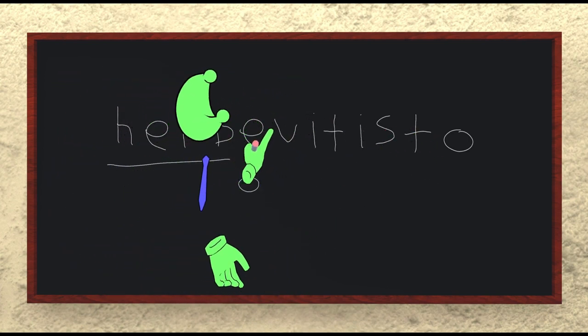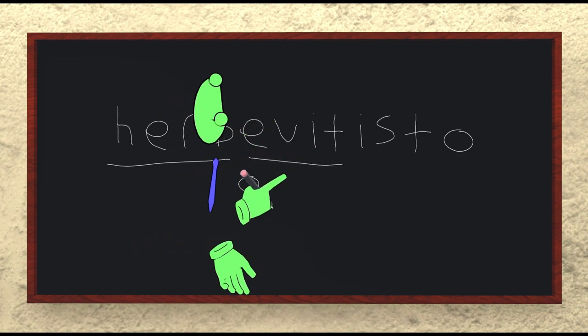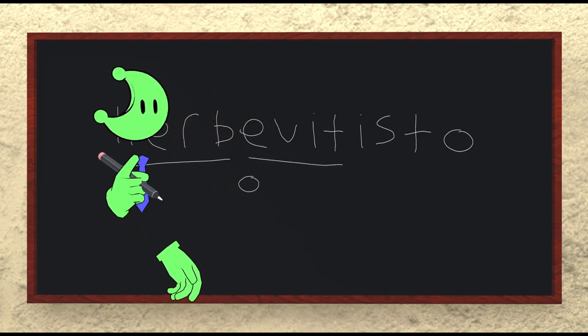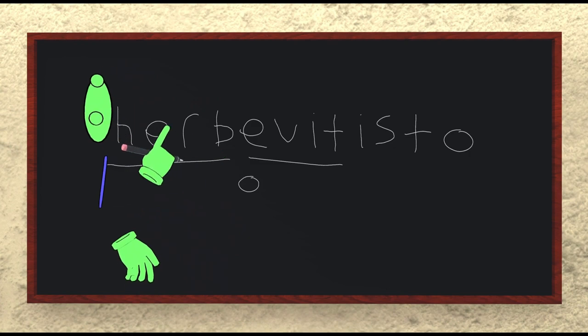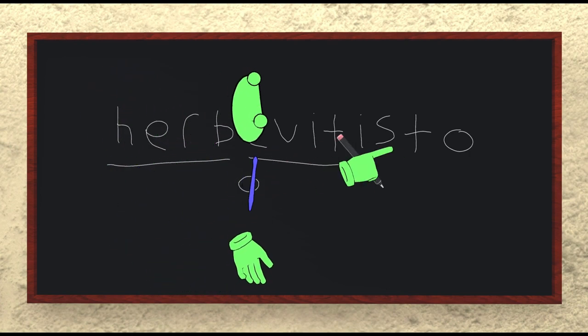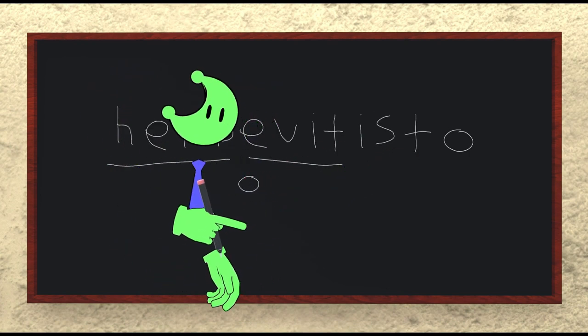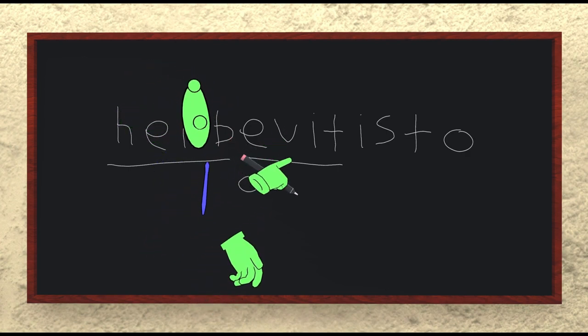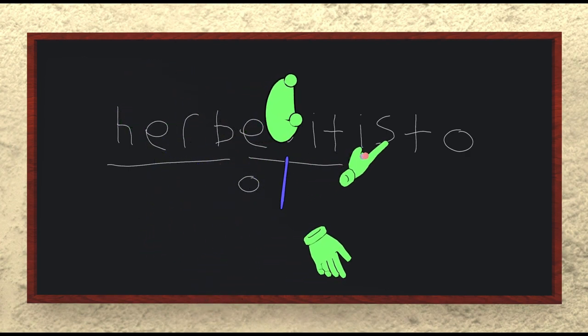Next, we have this suffix E-V-I-T, which doesn't work on its own. It needs to have, of course, some root, and usually an O suffix as well. E-V-I-T is a suffix meaning to avoid.